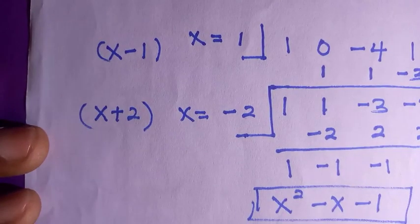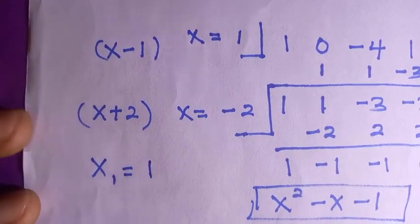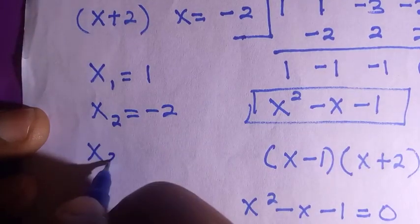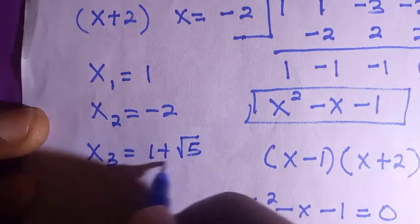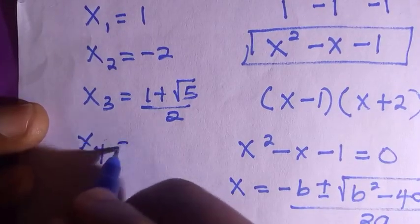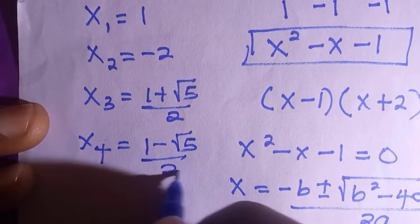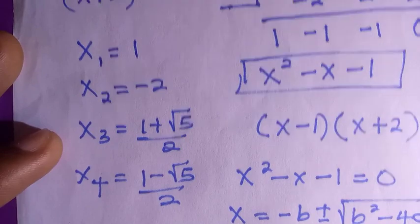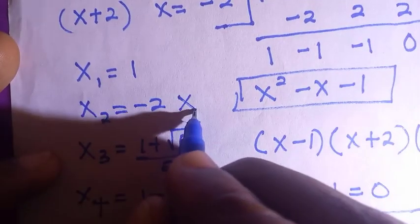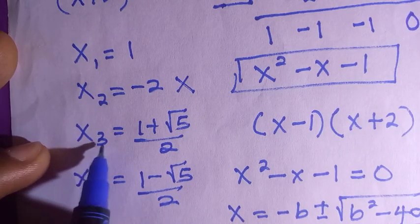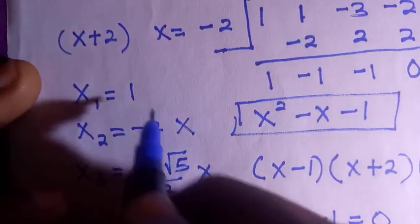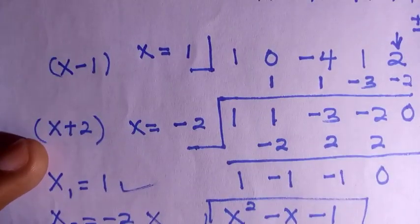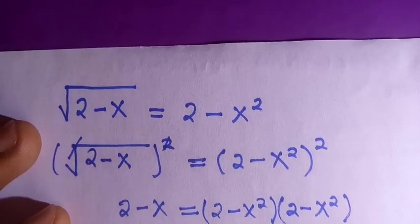So we have two possible values: x equals (1 plus root 5) divided by 2, or x equals (1 minus root 5) divided by 2. All four roots of the quartic are: x₁ equals 1, x₂ equals negative 2, x₃ equals (1 plus root 5)/2, and x₄ equals (1 minus root 5)/2. However, not all satisfy the original radical equation — x₂ and x₃ do not satisfy it; only x₁ and x₄ do.